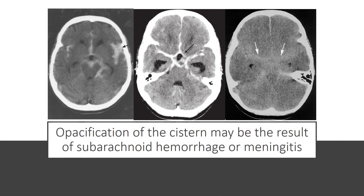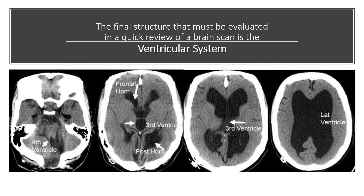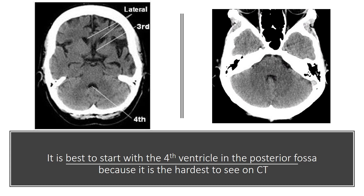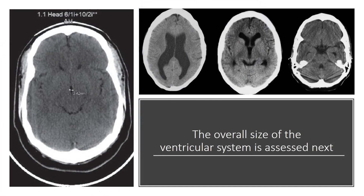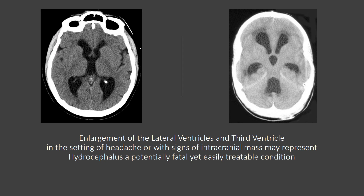The final structure that must be evaluated in a quick review of a brain scan is the ventricular system. It is best to start with the fourth ventricle in the posterior fossa, because it is the hardest to see on CT. Asymmetry or shift of the fourth ventricle may be the only sign of significant intracranial masses. Because of the shape of the fourth ventricle, some asymmetry in appearance may reflect the patient's position in the scanner. The overall size of the ventricular system is assessed next. Enlargement of the lateral ventricles and third ventricle in the setting of headache, or with signs of intracranial mass, may represent hydrocephalus, a potentially fatal yet easily treatable condition.